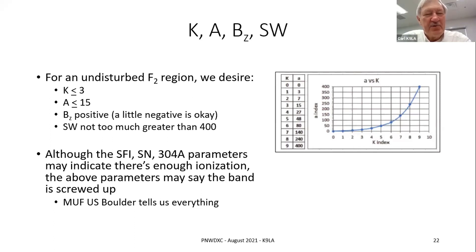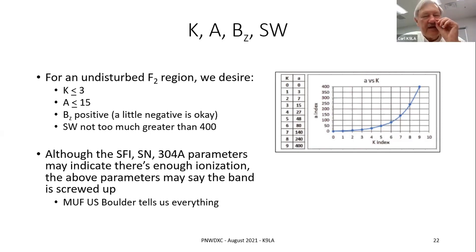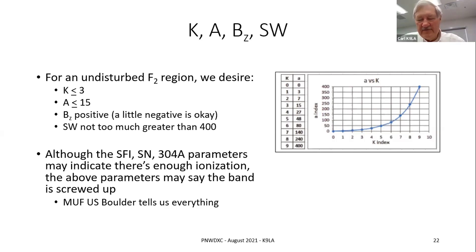The MUF US Boulder tells us everything, so really we don't need to separately look at SFI, sunspot number, EUV, K, A, B_z, and SW — that single measurement encompasses all of it. Of course it's only generally for the Boulder area, but it's pretty much good for the continental US, and it varies during the time of day. It's still a very good indication: if the MUF is very low, that may mean we've got lots of radiation ionizing the atmosphere but disturbances are disrupting the F2 region, keeping the MUF down.